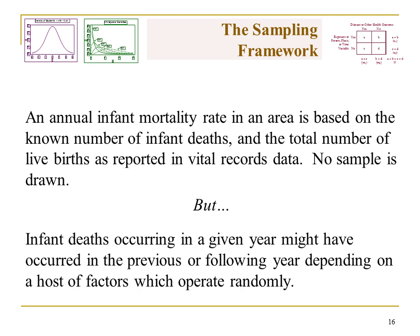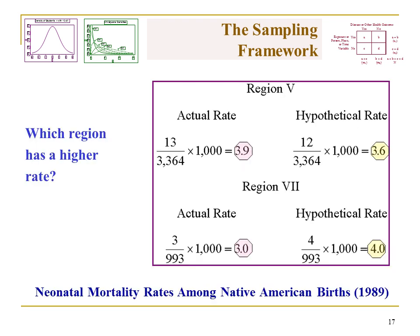An annual infant mortality rate in an area is based on a known number of infant deaths over the total number of live births in vital statistics — a sample isn't drawn. But infant deaths occurring in a given year might have occurred in the previous or following year, depending on a host of factors which operate randomly. To walk through this example about neonatal mortality rates among Native American births — neonatal mortality is a rare outcome, and Native Americans are a small population — so you can imagine that our estimates may be easily affected by small numbers issues.